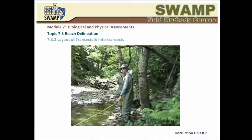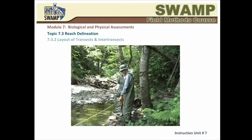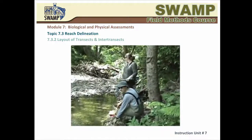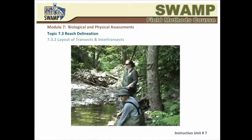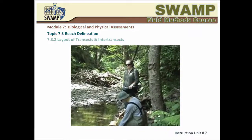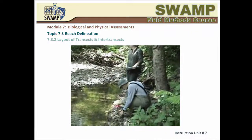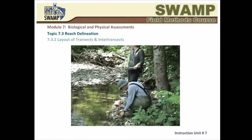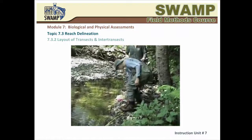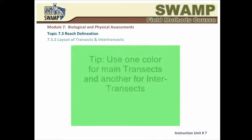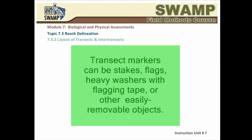They take the measurement for the next section from each marker. It makes it much easier if the identity of the transect or inter-transect is written on the tape. Some field crews prefer to mark only the transects in increments of 15 meters. You can be as creative as you want with your markers, as long as they do not cause any damage.